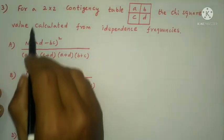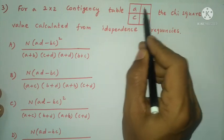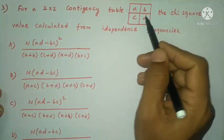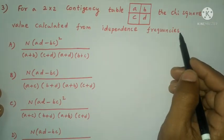Next question: For a 2 by 2 contingency table, the first row A, B, second row C, D, chi-square value calculated from independence frequencies.